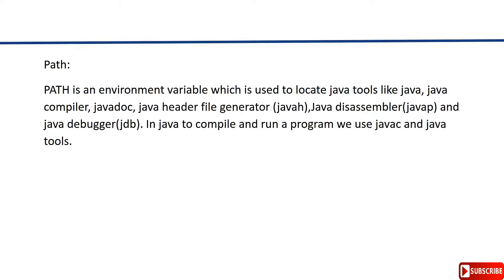Basically, PATH is an environment variable which is used by the operating system to locate Java tools like Java compiler, Java documentation, Java header file generator, Java disassembler, Java debugger, and other tools. To compile and run a Java program we use the javac and java tools. When we try to compile a Java program, the operating system will take the PATH environment variable's value as a reference and invoke the Java compiler.